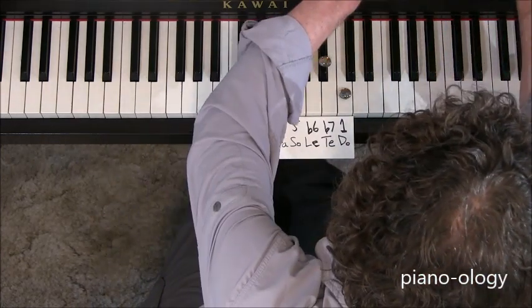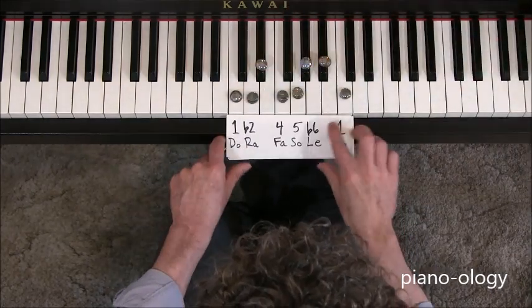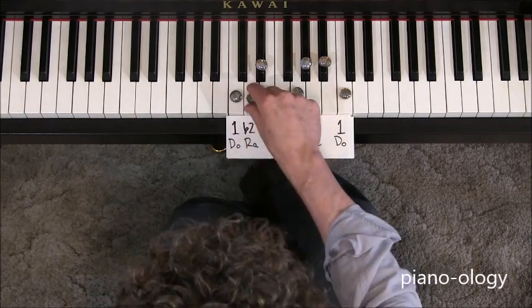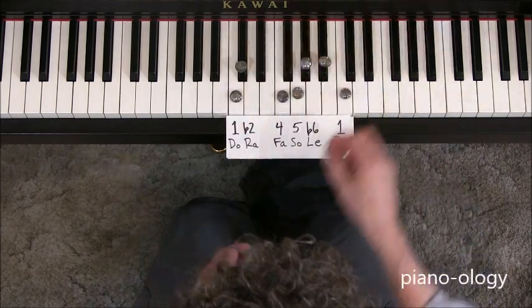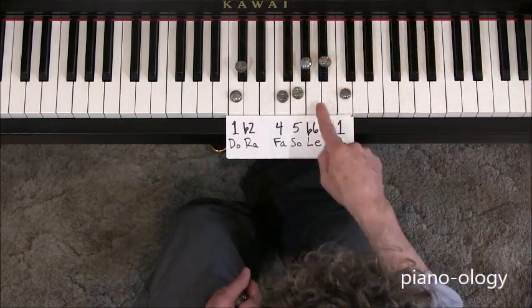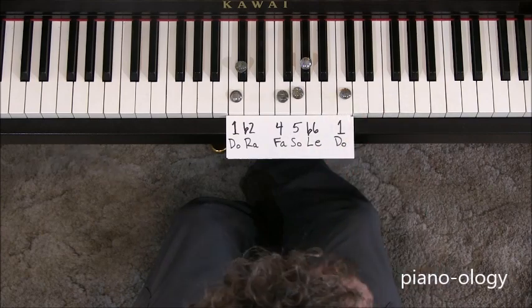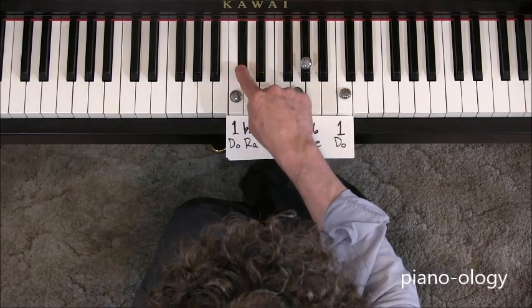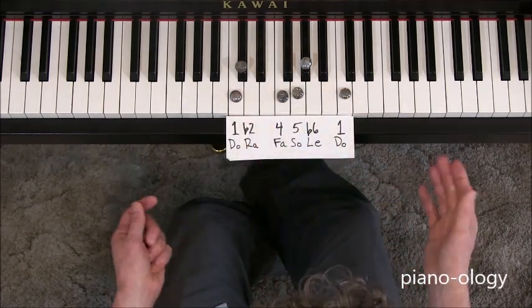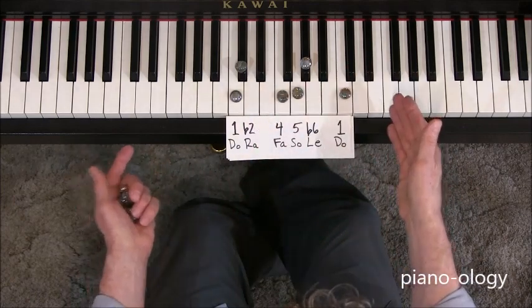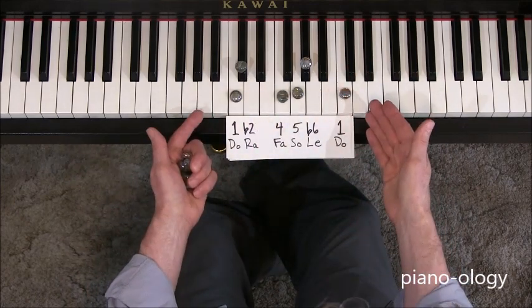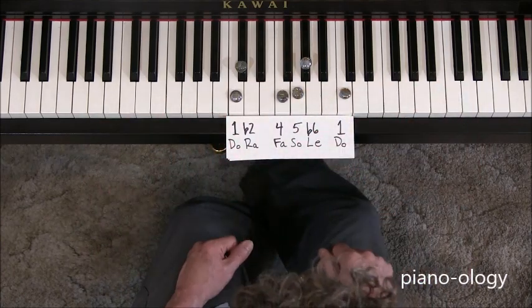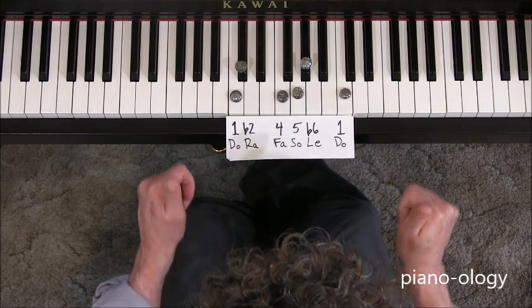Let's do another fun example, something a little more exotic. This is a Japanese scale. So we've got a one, flat two. Guess what? No three. Four, five, flat six. No seven. Let's have a listen. So those are just three examples of dozens of possibilities. Dozens of possible ways to divvy up all the twelve notes in a given octave to create a whole variety of scale types.